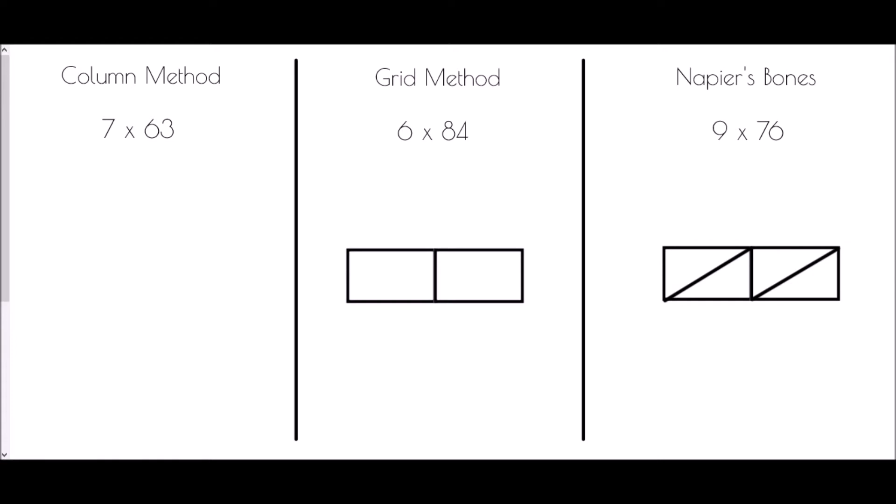I'm going to begin with the column method, because that is where most people will come from primary school — it will be the method you have been shown most of the time. So let's check how we use it for 7 times 63. You must make sure that when you set it up, the number with the fewest digits is at the bottom, and that the units are lined up with each other. So in this case the 7 is lined up with the 3.